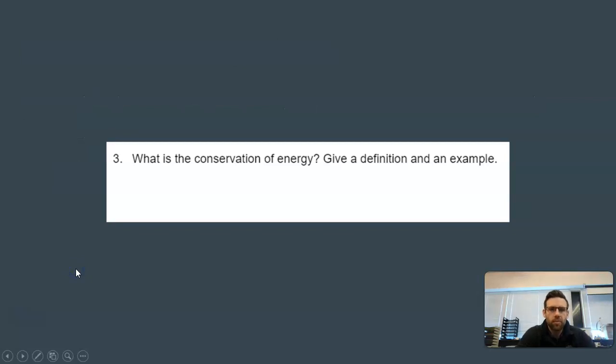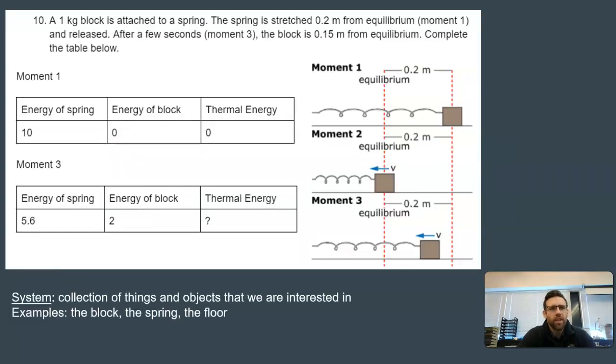One of the first questions on your pre-test was this one: What is the conservation of energy? Give a definition and an example. If you can answer this question, you have some basic understanding of this lesson. If you can answer one of these questions here, you have some really good understanding. Let's look at this problem. This was the one where you have a one kilogram block attached to a spring. The spring is stretched 0.2 meters from equilibrium and then it's released. After a few seconds, the block is 0.15 meters from equilibrium. You had to complete the table below.